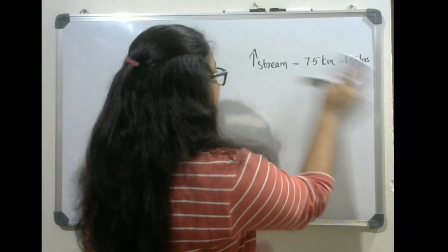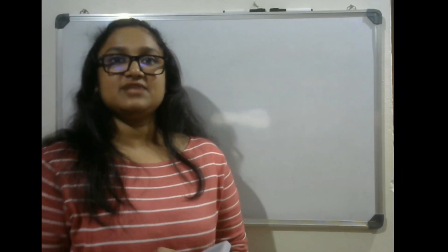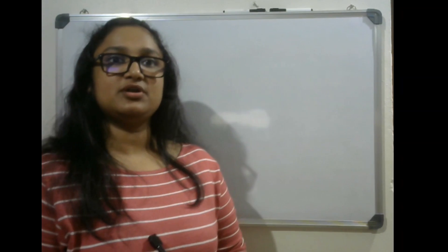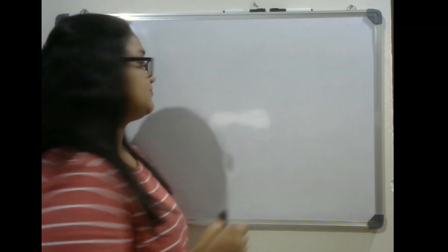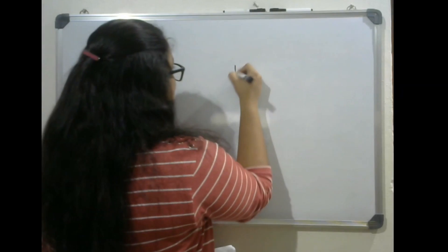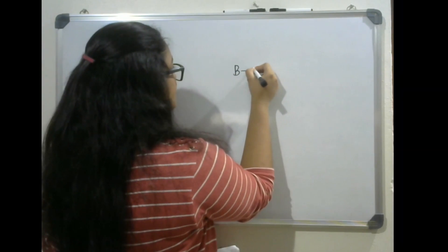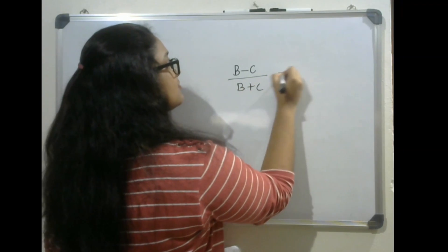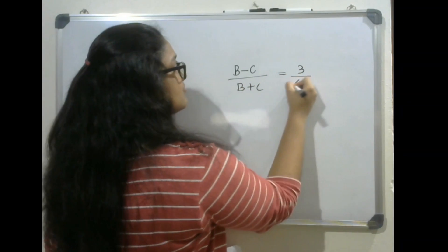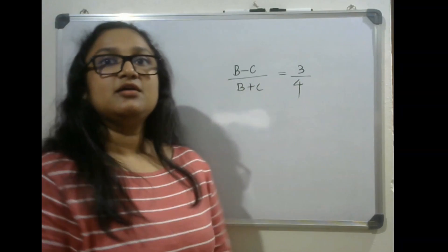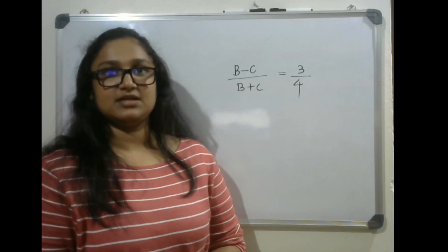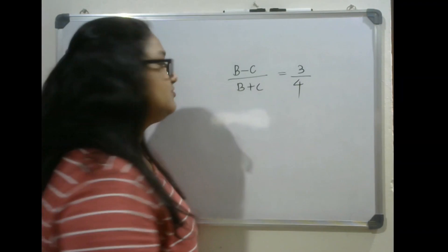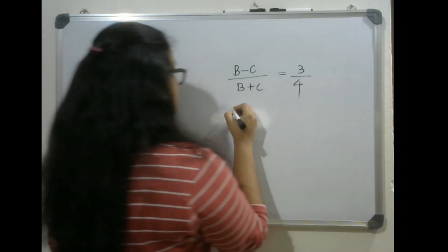Moving on to the next question. The respective ratio between speed of the boat upstream and speed of the boat downstream is 3 is to 4. What is the speed of the boat in still water if it covers 70 kilometers downstream in three and a half hours?